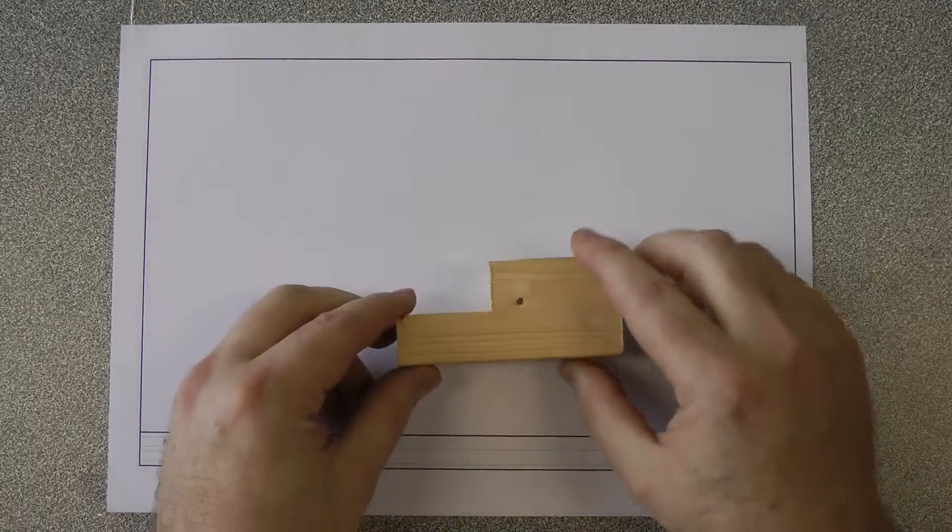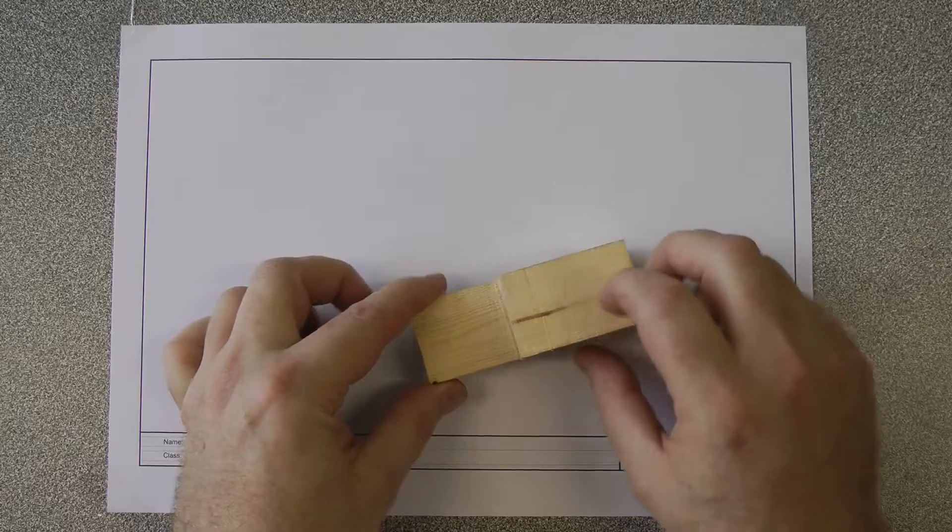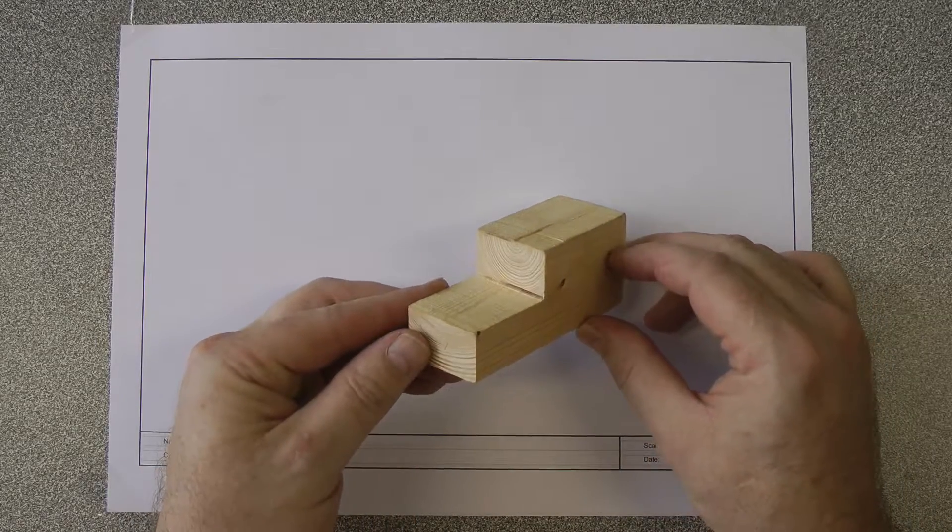This is the shape, the face we're going to have at the front, that's going to be the left side and the top. An isometric will show all of them at the same time.